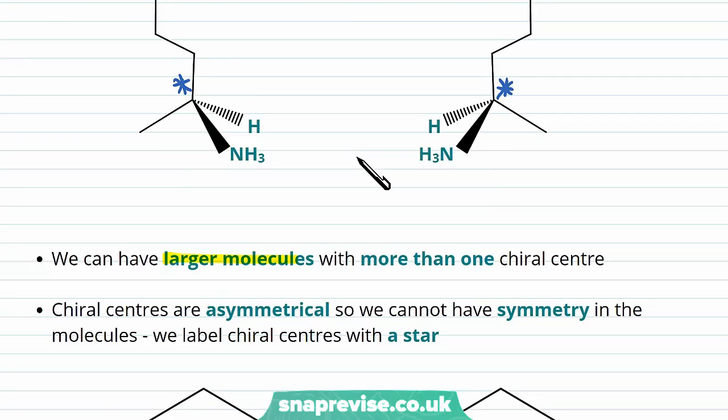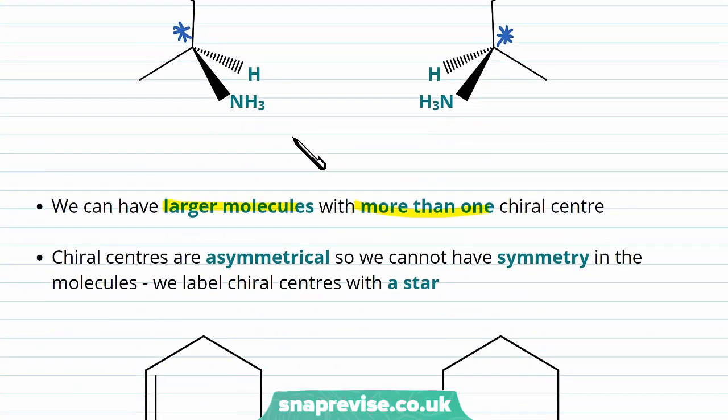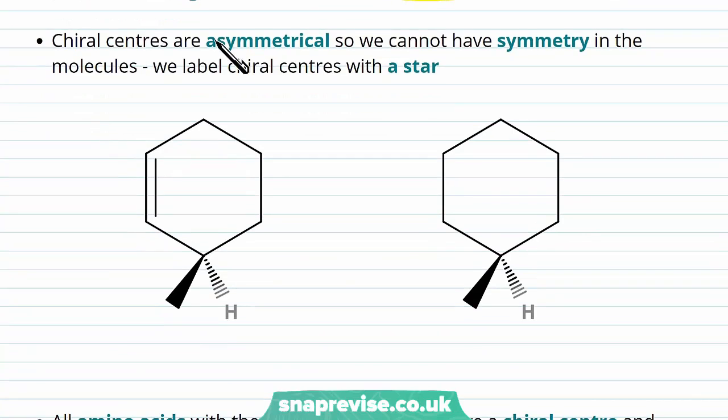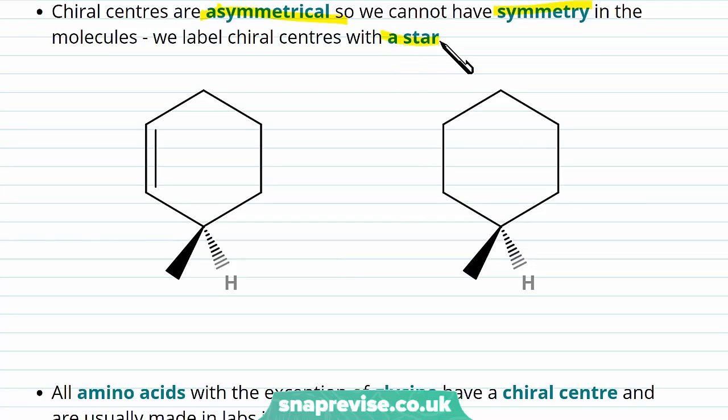These molecules are quite simple and small, but we can have large molecules with more than one chiral centre involved. Chiral centres are asymmetrical, and so we cannot have symmetry in a molecule that is going to have a chiral carbon. We'll label chiral carbons with a star, and this is a very common thing to do. So in this molecule here, because of the double bond making it asymmetric along this line, this carbon, shown by the star here, has effectively four different groups attached. It has a CH3, a hydrogen, and then if you go in different directions around this ring, you will encounter different groups in different orders.